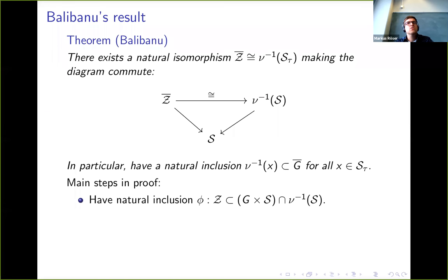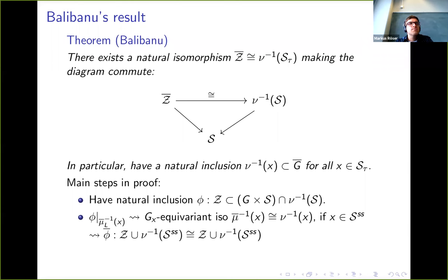The proof of this follows the following steps. First of all, the universal centralizer sits naturally inside G×S, and G×S on the other hand sits naturally inside the standard family of Hessenberg varieties as the open dense symplectic leaf, and it turns out that it actually sits inside the intersection of G×S with this Poisson slice. Now the restriction of this inclusion to the moment fibers inside the universal centralizer bar, it turns out that this extends to an isomorphism with the associated Hessenberg variety, at least as long as X is semi-simple.